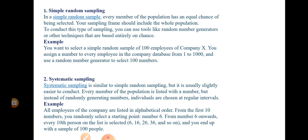Systematic sampling is similar to simple random sampling, but it is usually slightly easier to conduct. Because the word is 'systematic,' the work is done in a systematic way. Every member of the population is listed with a number, but instead of randomly generating numbers, individuals are chosen at regular intervals.